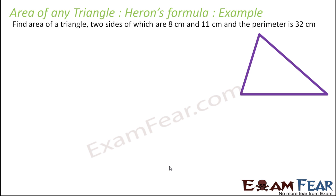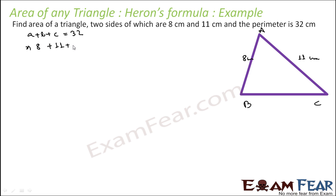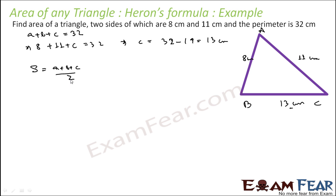Let us take another example of Heron's formula: find the area of a triangle where two sides and the perimeter are given. Let triangle ABC have sides A = 8, B = 11, and perimeter = 32. The perimeter is the sum of all sides, so C = 32 − (8 + 11) = 13 cm. Now all three sides are known. S = (8+11+13)/2 = 32/2 = 16 cm.